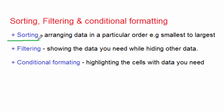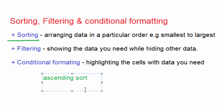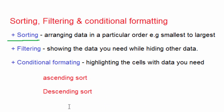The same applies to numeric data. You can arrange the data from the smallest value to the largest value — that is what we call ascending sort. Or you can arrange from the largest value to the smallest value — that is what we call descending sort. So ascending means climbing the ladder from lowest to highest, and descending means from top to bottom. That is how we apply this in MS Excel, as I will show you.